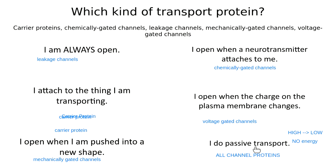When we talk about these channel proteins in general, we're actually going to see these proteins pop up all over the place when we're talking about how neurons work. Channel proteins, regardless of where they're found, are always doing passive transport. That's the big idea.